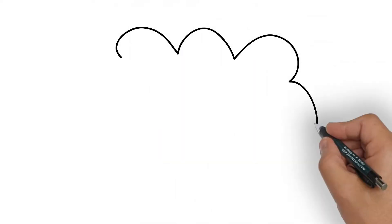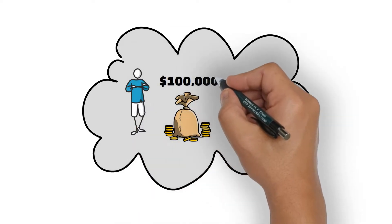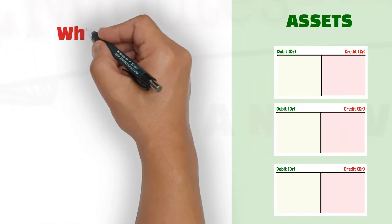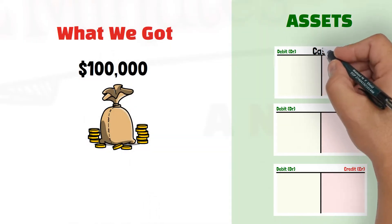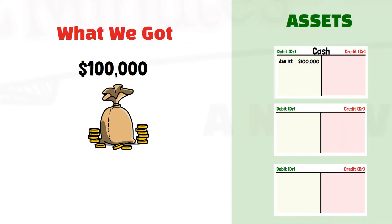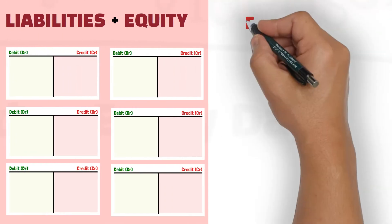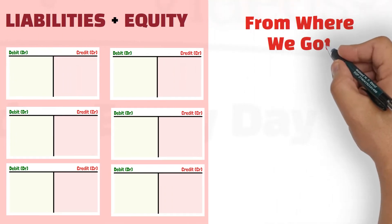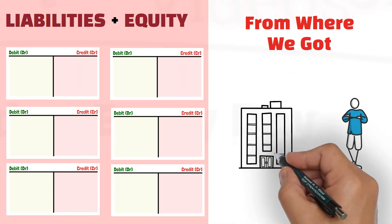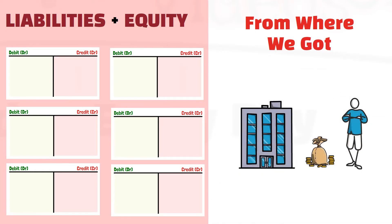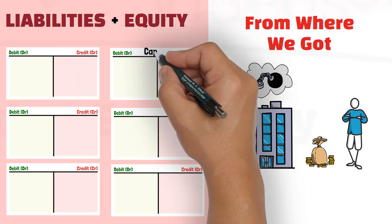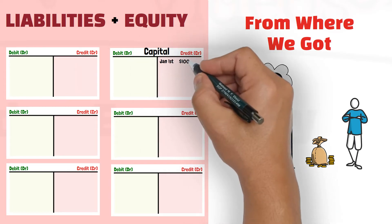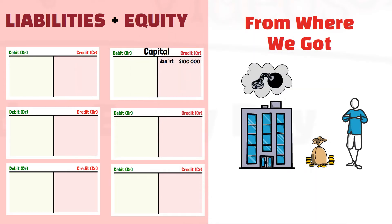In the previous video, Mr. Stick contributed cash of 100,000 to establish his business. The resource that the business got is the cash of 100,000, and that increase in cash is debited to the cash account, which is an asset account. That is the first part of the entry. The second part focuses on from where the business got that cash. It is the owner of the business who injected that cash to increase the capital of the business. So there is an obligation to the owner of the business, and that obligation is recorded by increasing or crediting the capital account, which is an equity account, by 100,000.